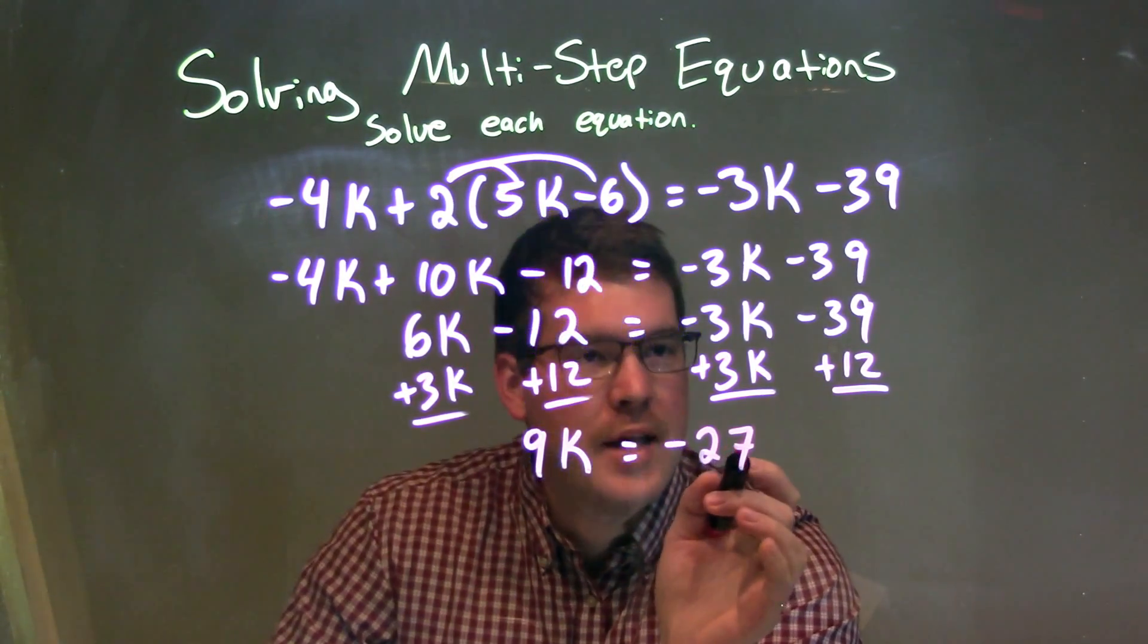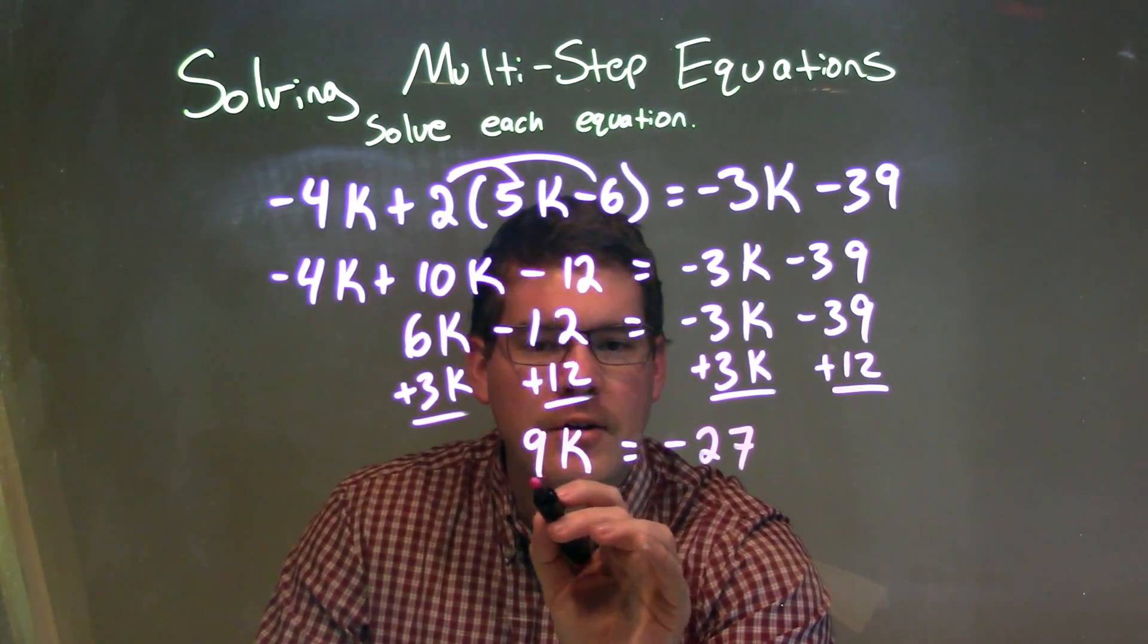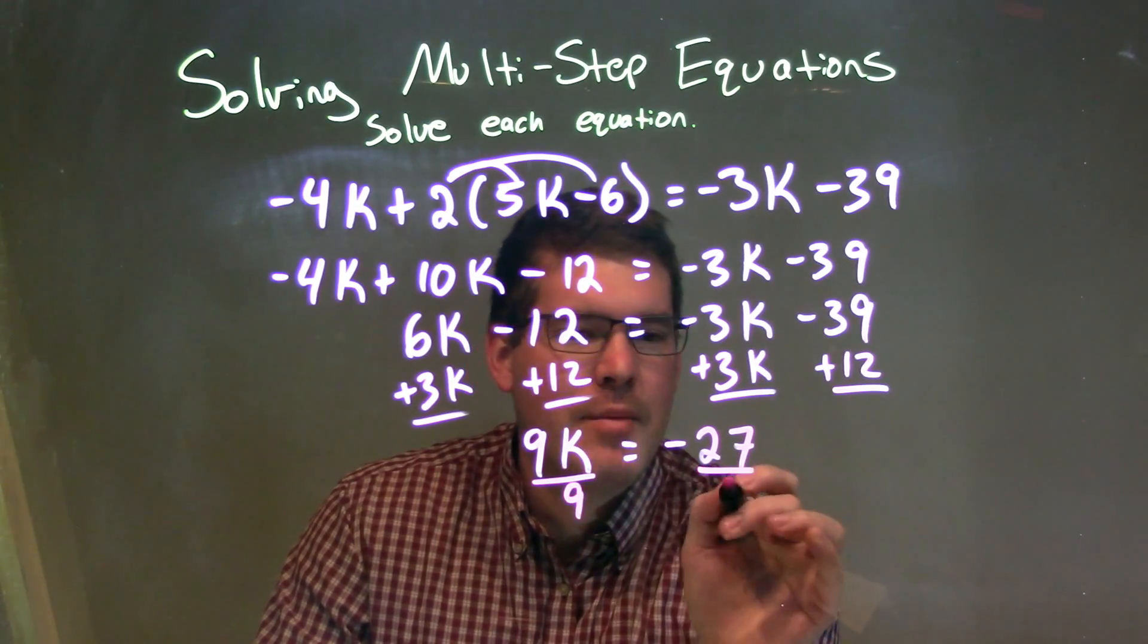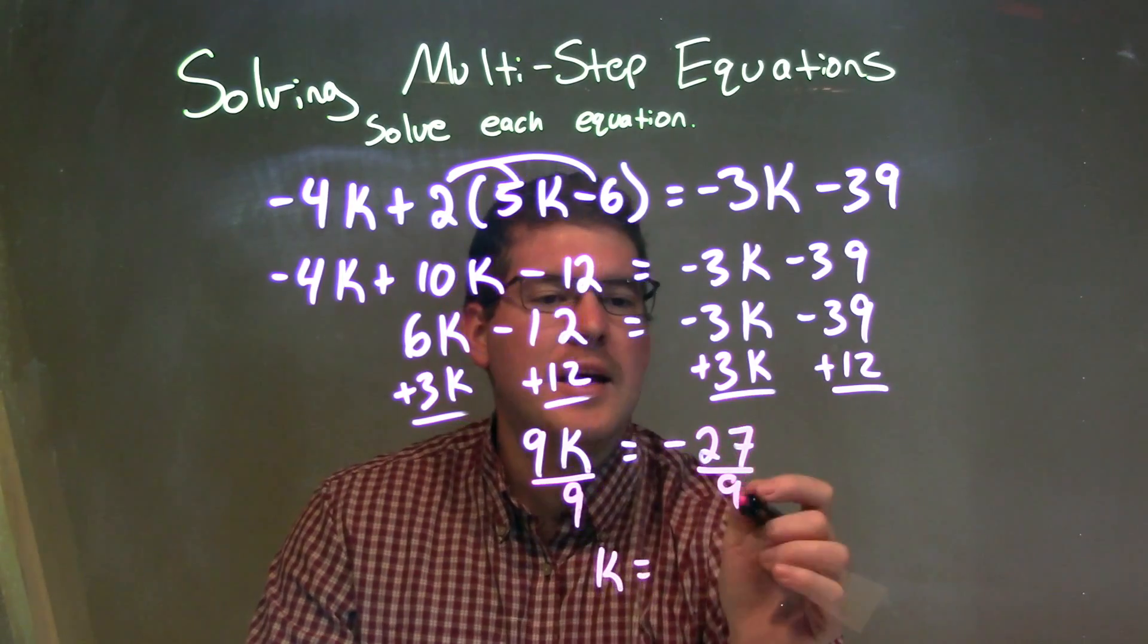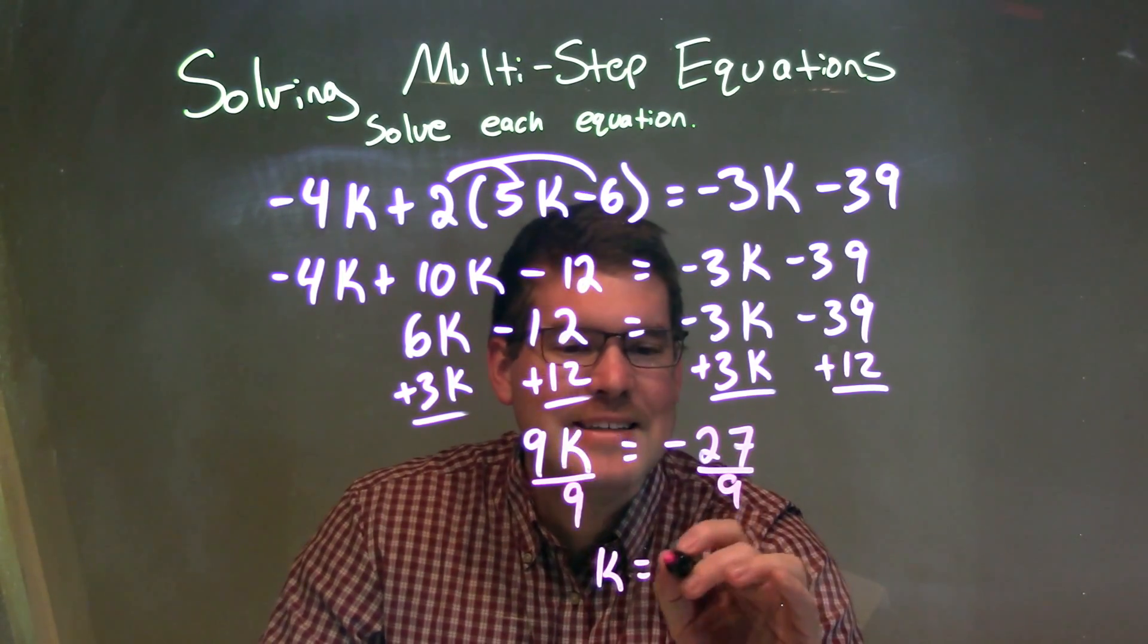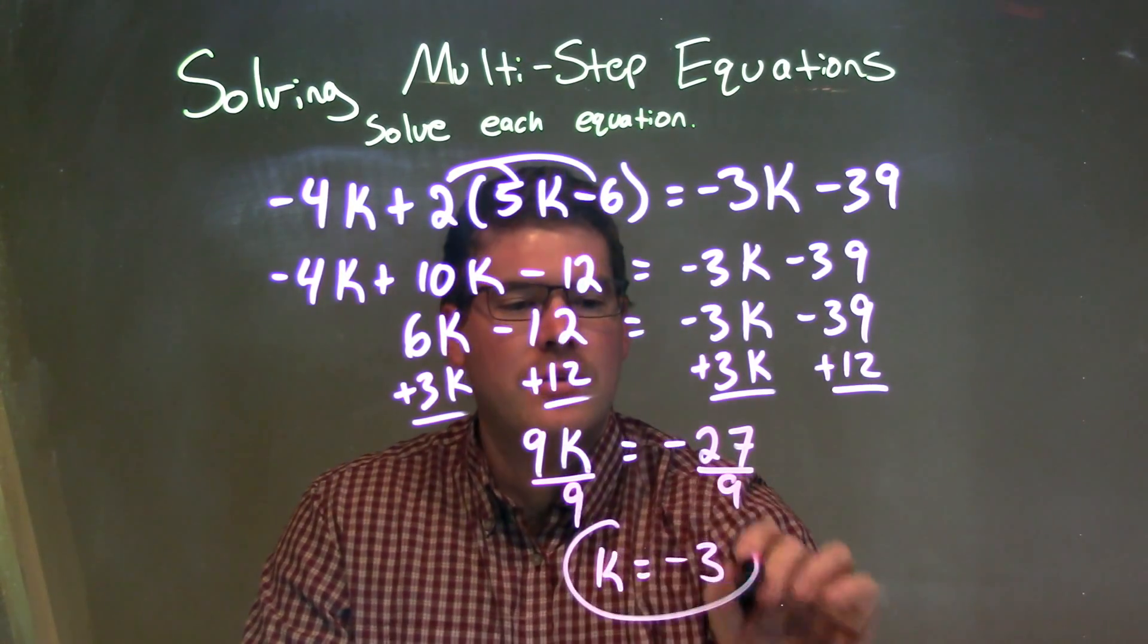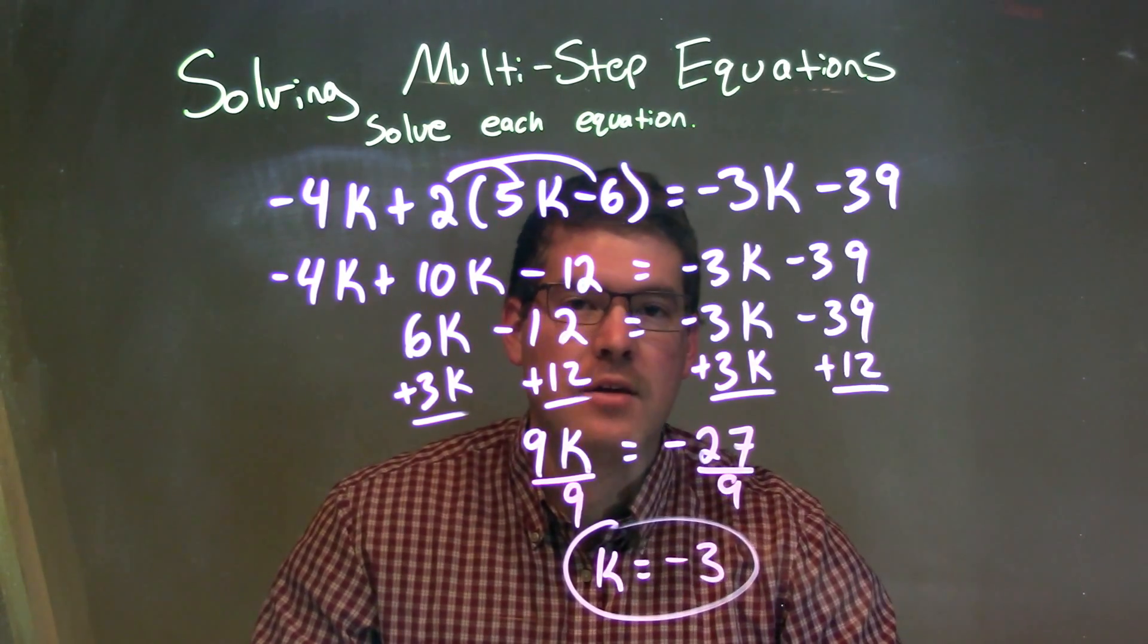So, now I have 9k equals negative 27. I divide by 9 on both sides and get k by itself. Okay? I'm left with k here by itself and negative 27 divided by 9 is negative 3. And so, our final answer here is k equals negative 3.